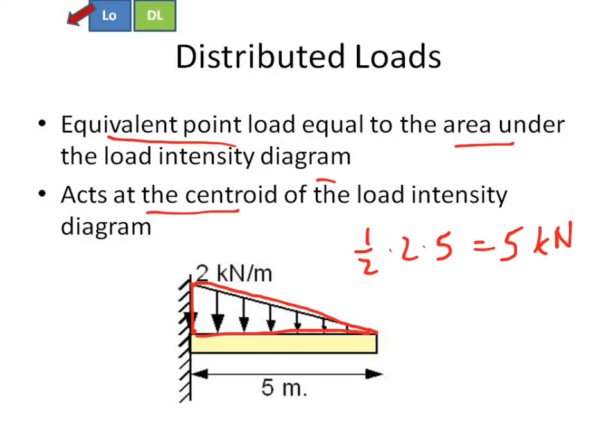And that will act at the centroid of the load intensity diagram. So my centroid is a triangle, so that 5 kilonewtons is going to act a third of the way from the big end, 5 thirds meters from the wall.